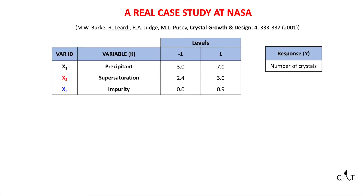The following variables have been defined: precipitant, supersaturation and impurity, as well as their levels. The goal was to get bigger sized crystals, and as an indirect measure of it, the number of crystals was used, since a lower number of crystals meant bigger crystals. So in order to get a bigger size, we want to minimize this response — the number of crystals. Considering two levels only, here we have a typical example of a full factorial design.